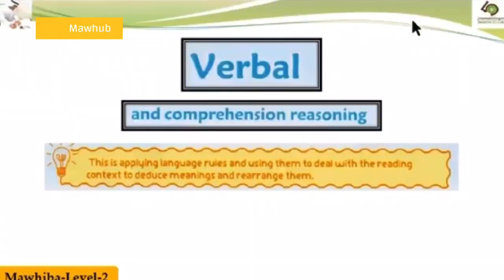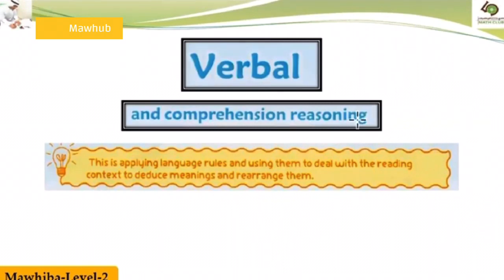Hi everyone, Mr. Zeki with you now. This is the second video in Level 2. The second part is the variable section and comprehension — applying language rules and using them to deal with the reading context, to deduce meanings and rearrange them. We will try here; I think it is easy for you because your language is fluent.